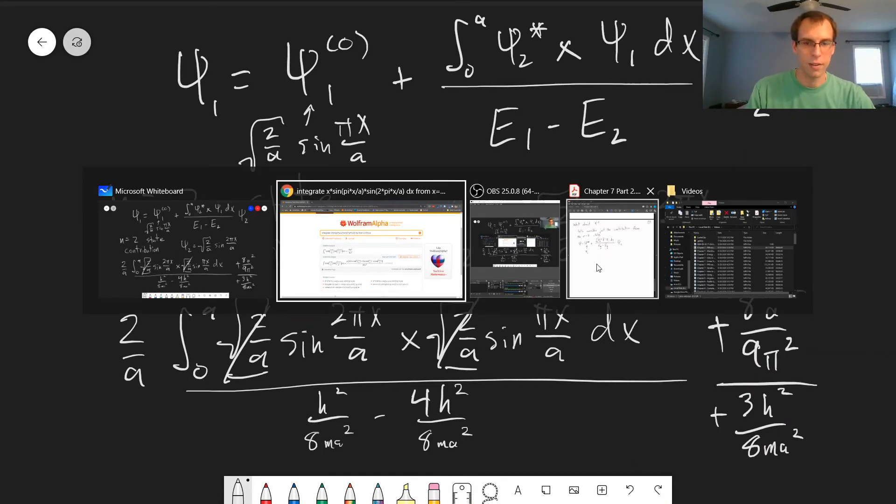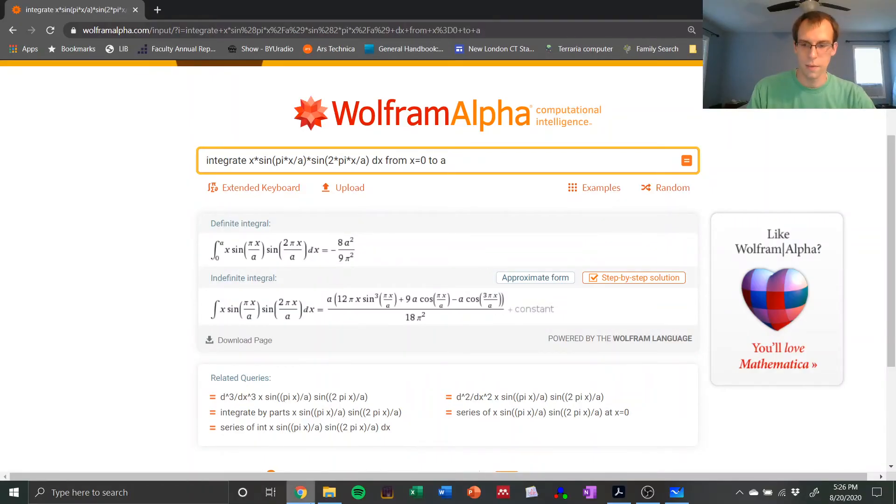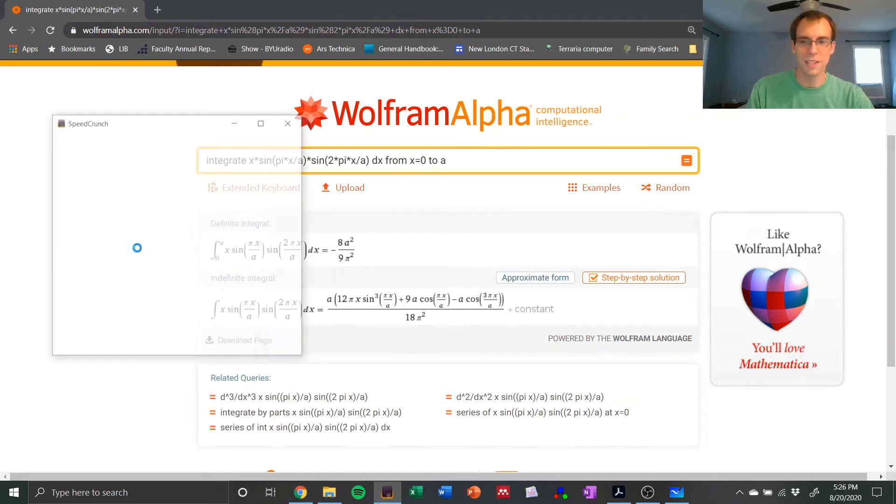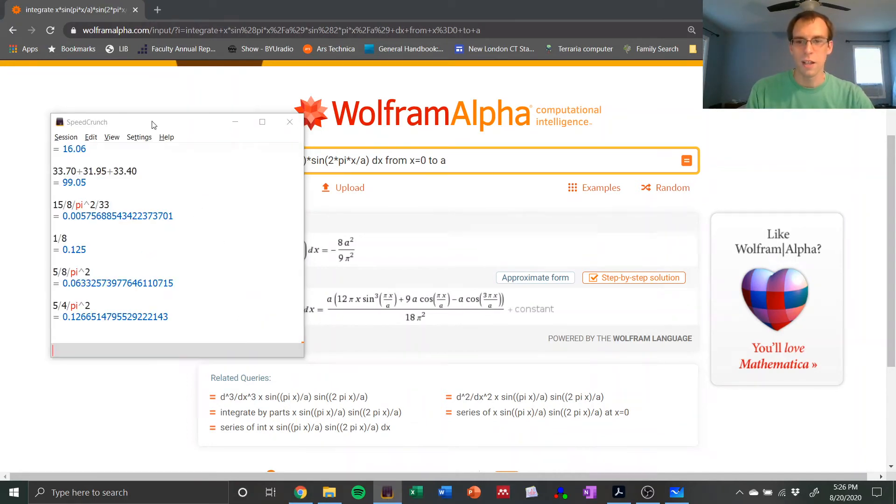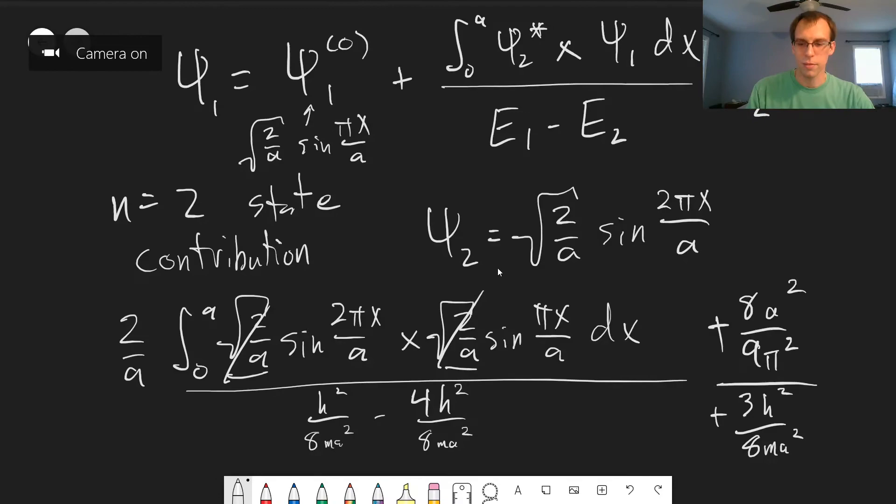Let me just pull up a calculator. This is the one I like to use. If you're interested, this is called Speed Crunch. Let's go back to our whiteboard. So we need 8 over 9π².